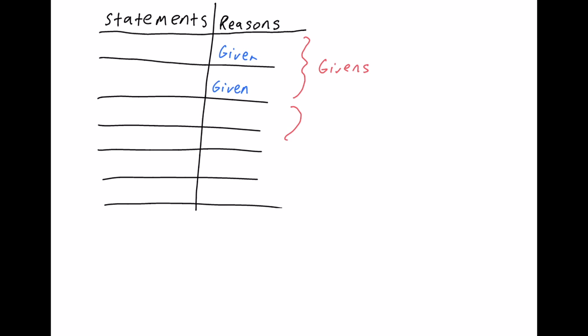The next section — again, it'll take a different amount of lines every time — is your body. The body of the proof is going to be the most difficult part. Whatever statements you come up with there are the things that get you eventually to the conclusion. You have to say other things before you get to the final part, and the reasons can vary — I'll give examples of reasons in a moment.